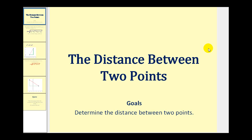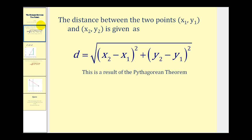Welcome to a lesson on how to determine the distance between two points. The distance between two points, x sub one, y sub one, and x sub two, y sub two, is given as d — the distance — is equal to the square root of the quantity x two minus x one squared, plus the quantity y two minus y one squared.